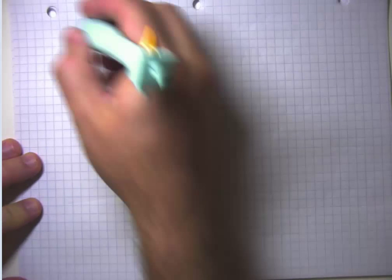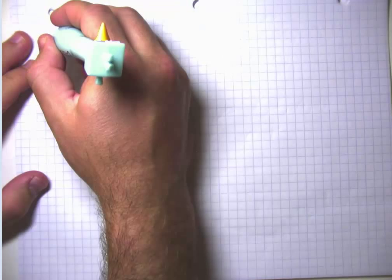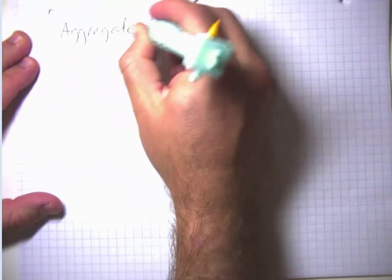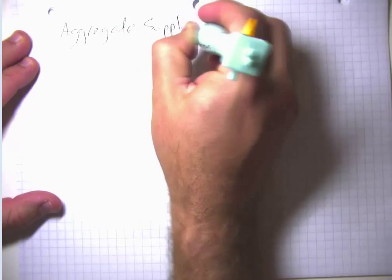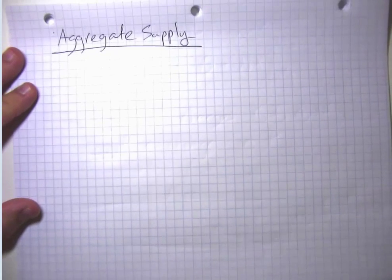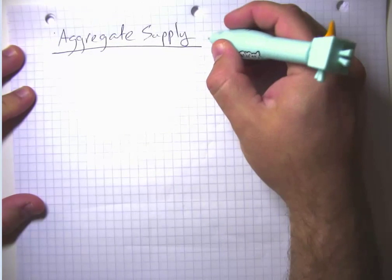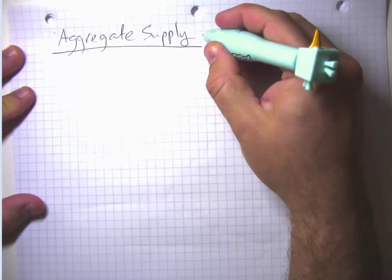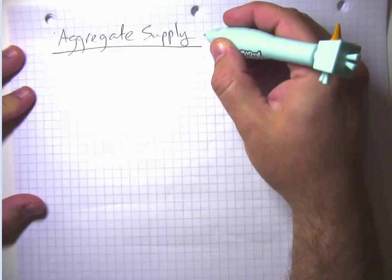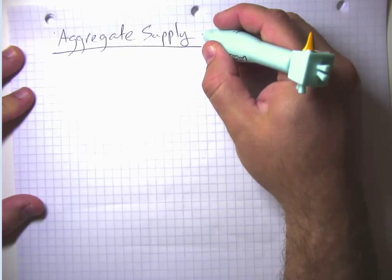In this segment, we're going to introduce the idea of aggregate supply, and here's where things are going to start to look different than what we've seen in our normal markets for cereal or milk or whatever. What's going to happen here is that we are going to have two simultaneous supply curves in the aggregate demand, aggregate supply model.